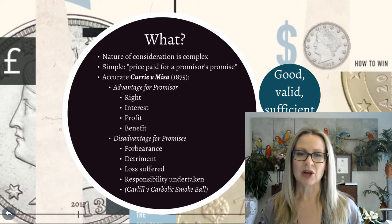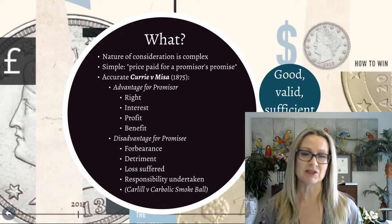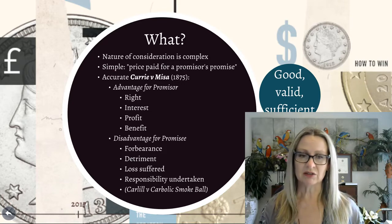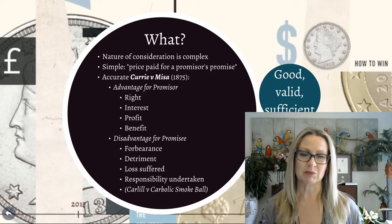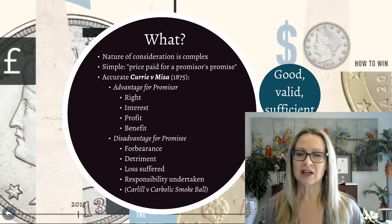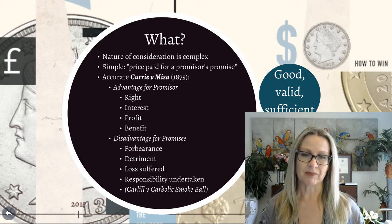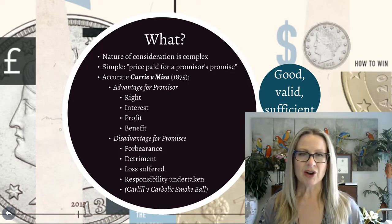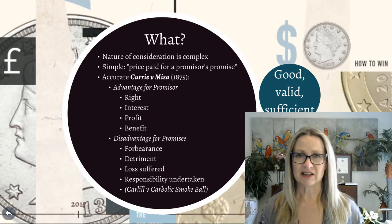On the disadvantage side, you might have the promisee forbearing — refraining from doing something they could otherwise do — some kind of detriment, loss suffered, or responsibility undertaken. An example of that last one: going back to Carlill, Mrs Carlill bought the smoke balls and actually inhaled them, used them as instructed for the two-week period. That constituted a detriment or responsibility she undertook, and that was the consideration for obtaining the £100 reward.